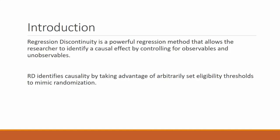Regression discontinuity is a powerful regression method that allows us to identify causation by controlling for observables and unobservables. Some methods, like propensity score matching, only allow us to control for observables. But regression discontinuity is one of the more powerful methods because it controls for both. What regression discontinuity does is mimic randomization by taking advantage of an arbitrarily set eligibility threshold.